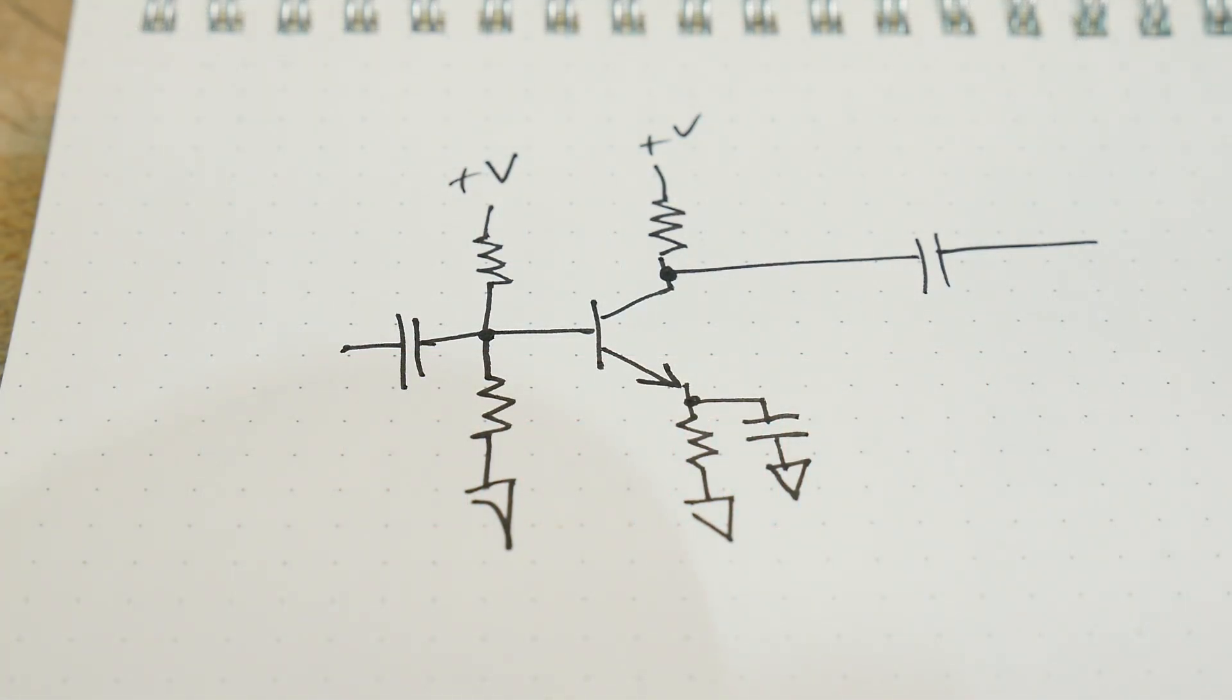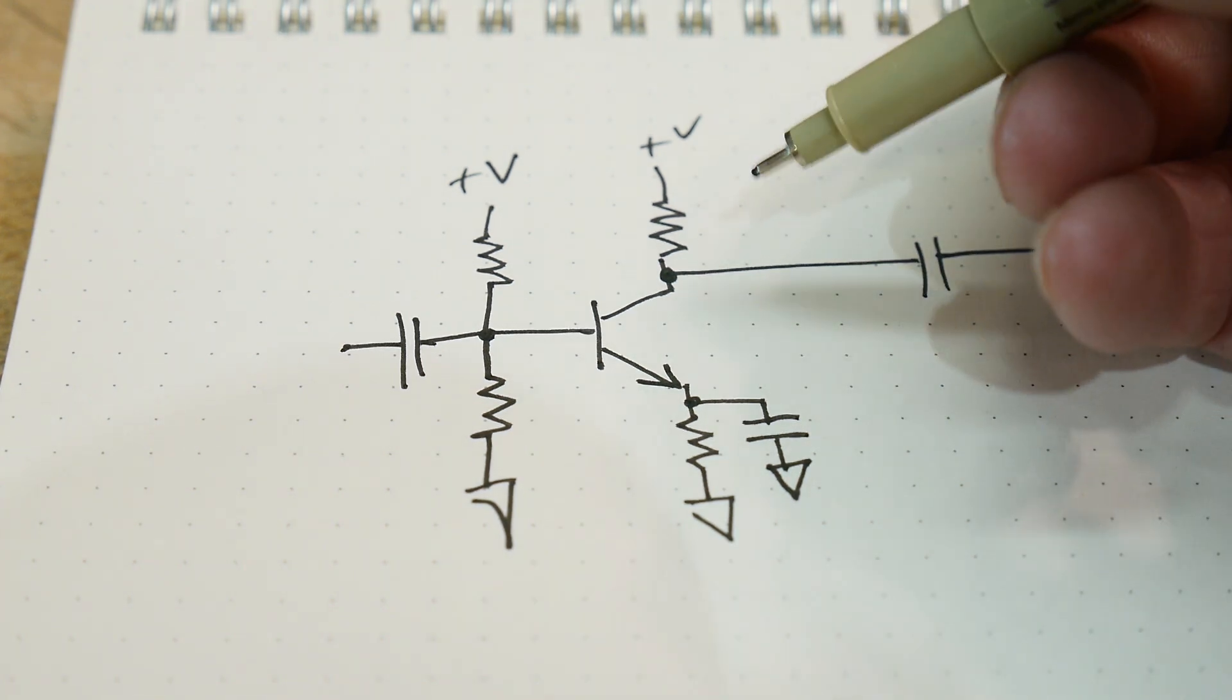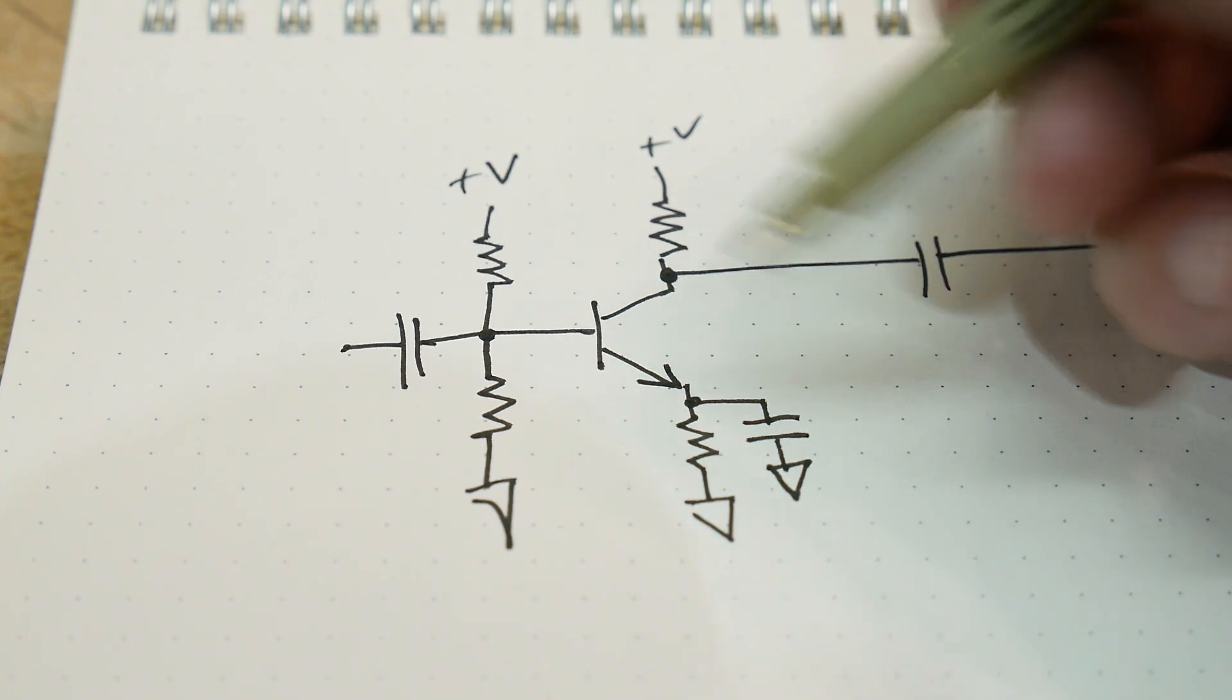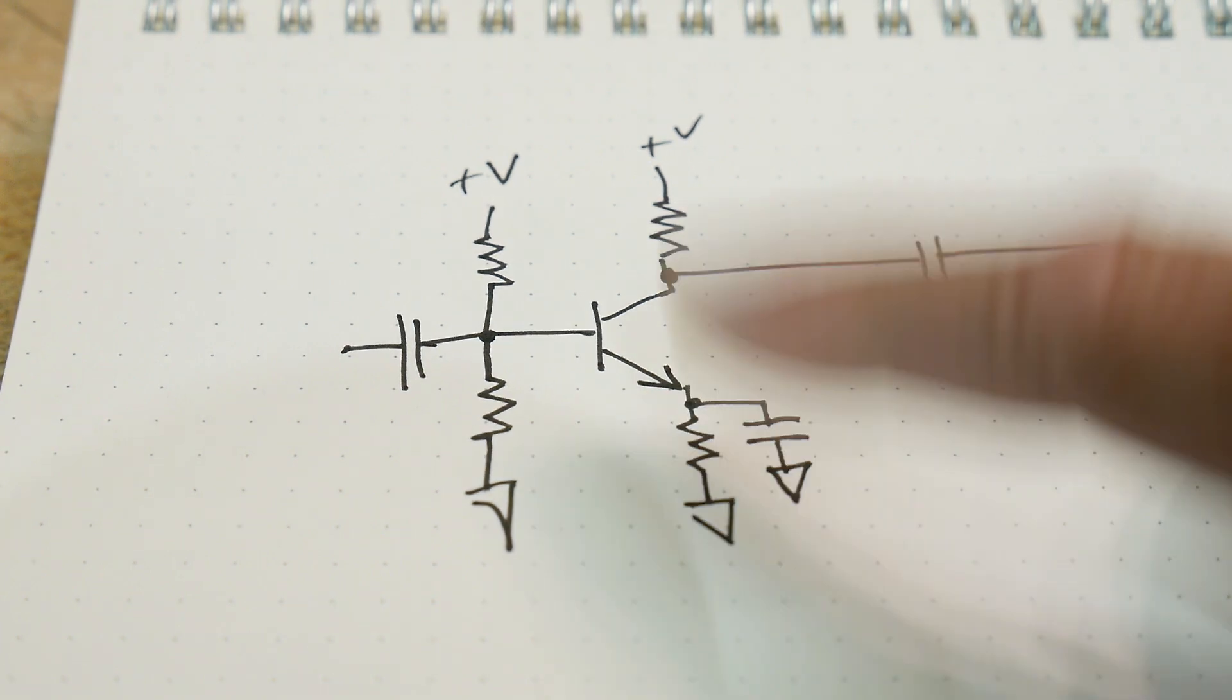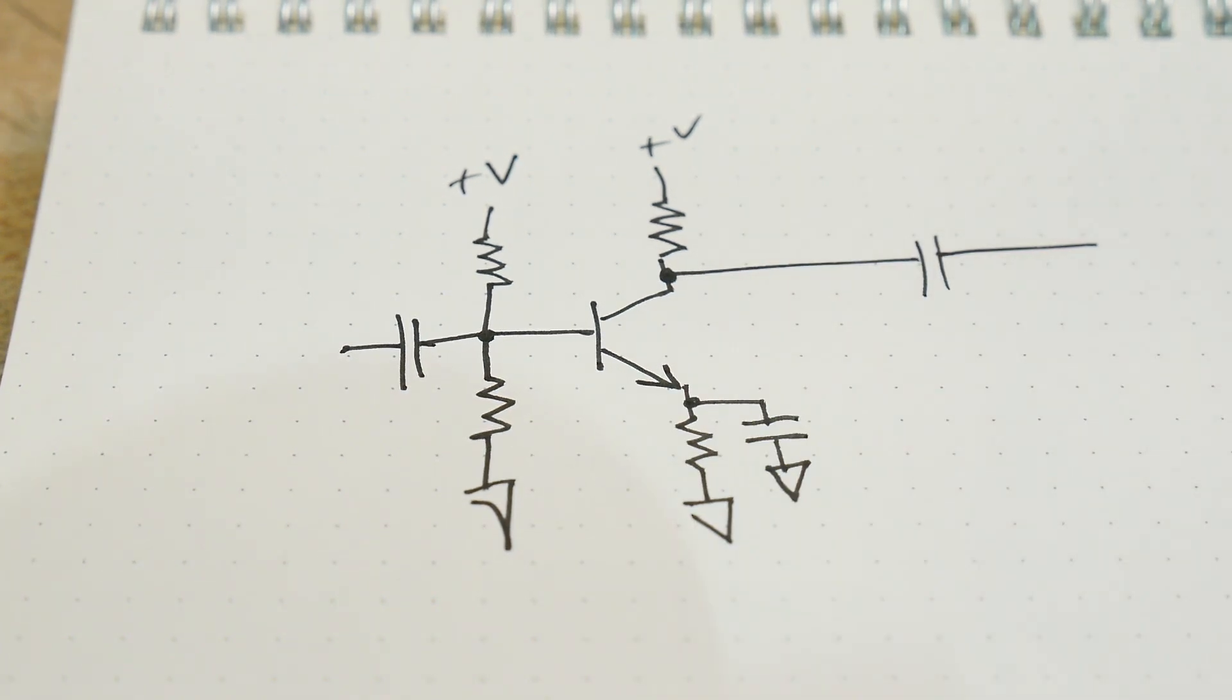So I've showed you a very simple common emitter amplifier, but if you take a look at schematics you'll often see something that looks like this. There'll be some extra things down here. And so let's talk about those extra things and why they might be there.